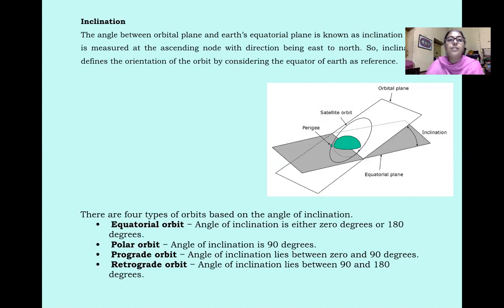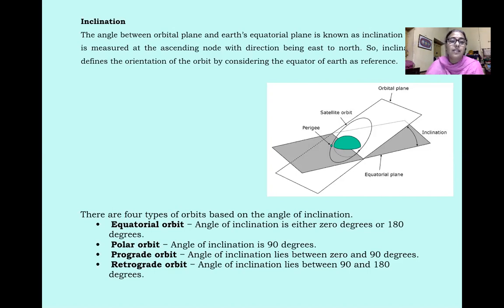Inclination: The angle between the orbital plane and the earth's equatorial plane is known as the inclination angle, measured at the ascending node with direction being east. Inclination angle defines the orientation of the orbit using the equator of the earth as reference. There are four types of orbits: equatorial orbit, polar orbit, prograde orbit, and retrograde orbit.